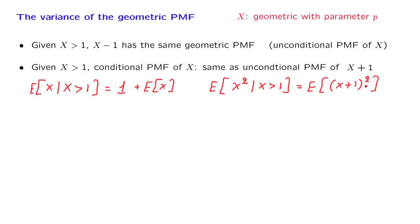Now let us take those facts and use a divide and conquer method to calculate the expected value of x squared. We will use exactly the same method we used to calculate the expected value.